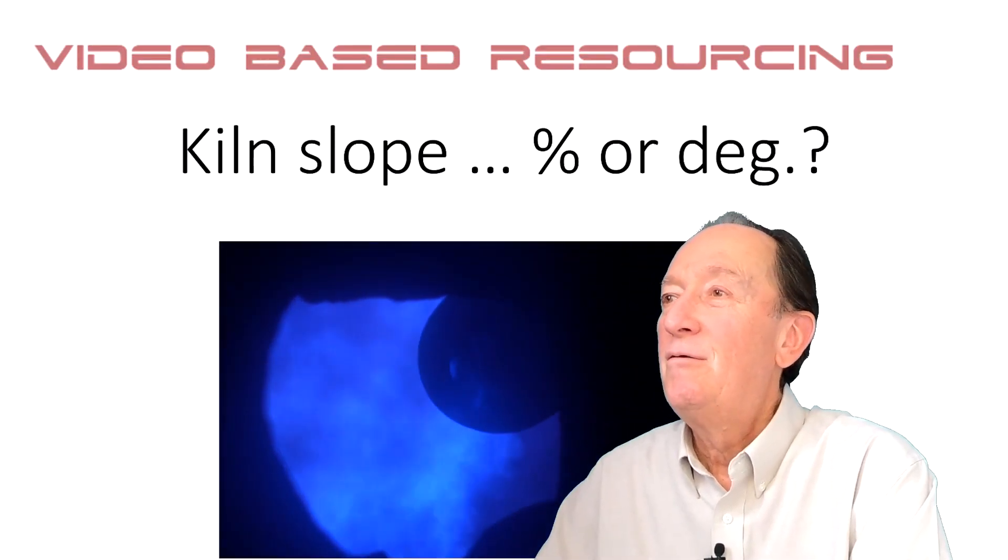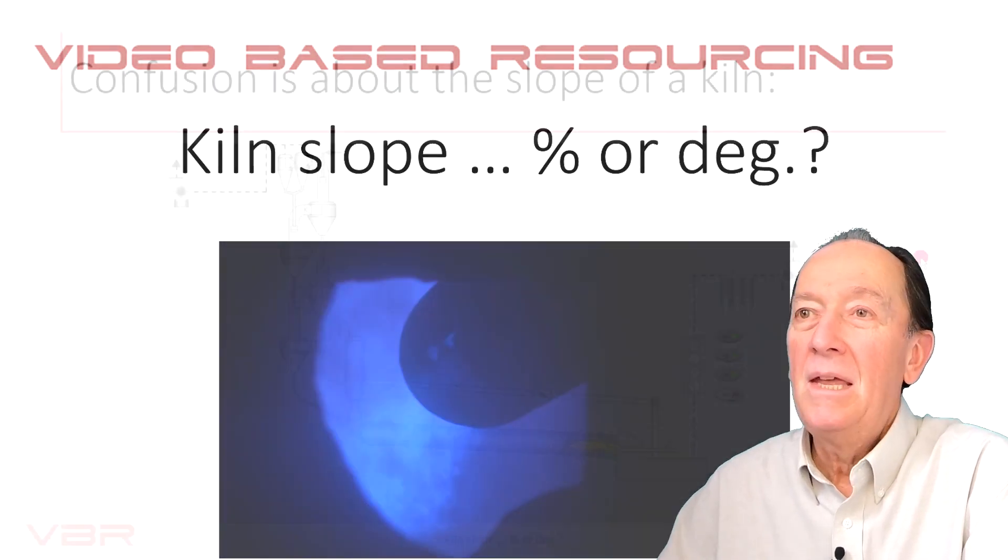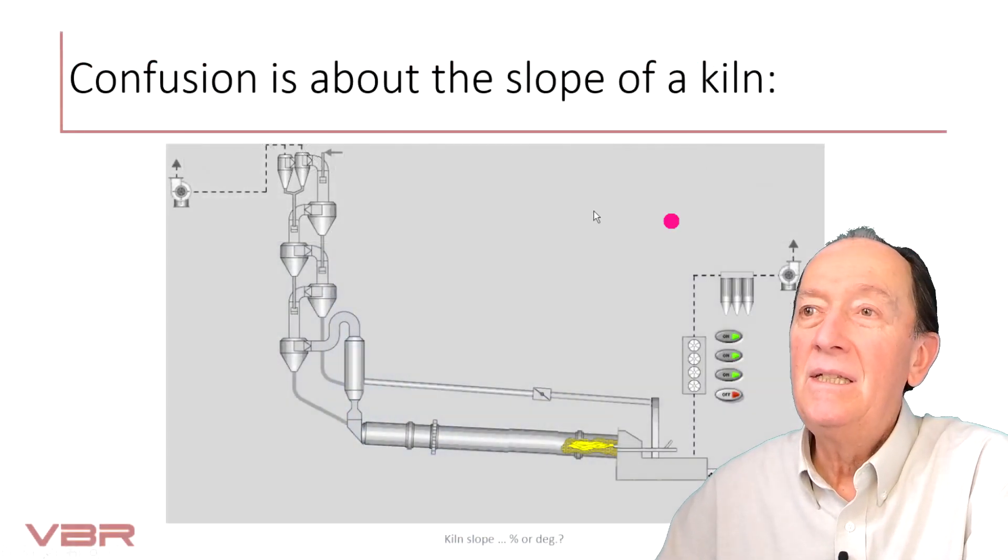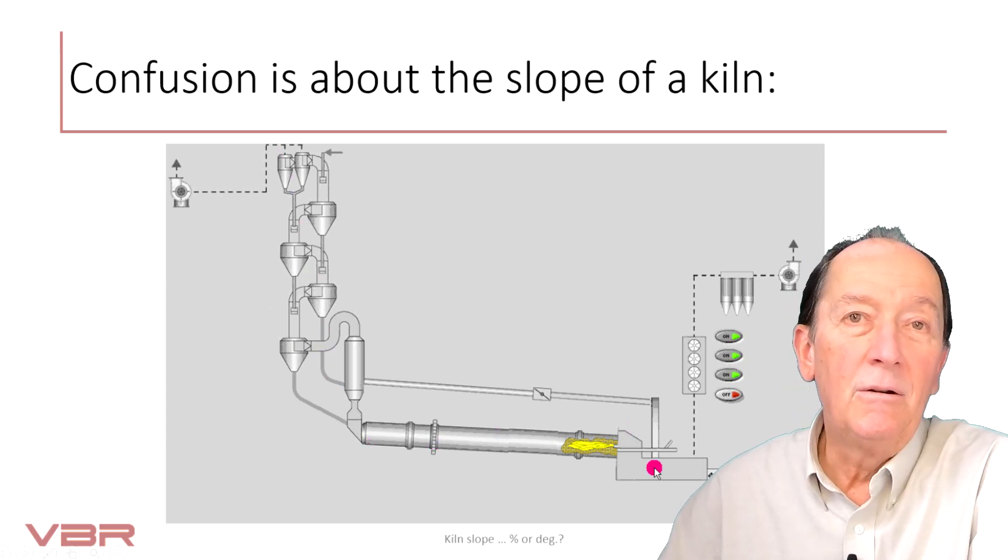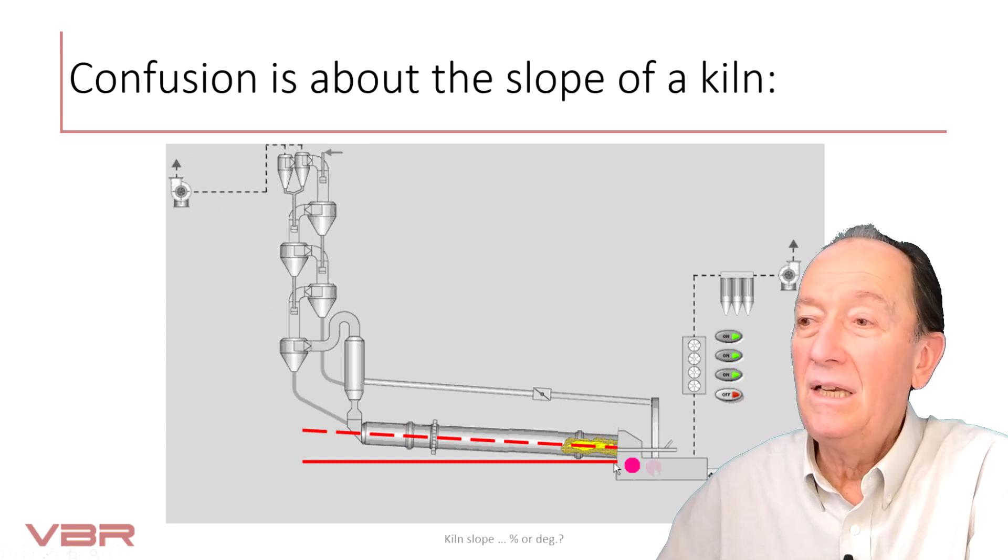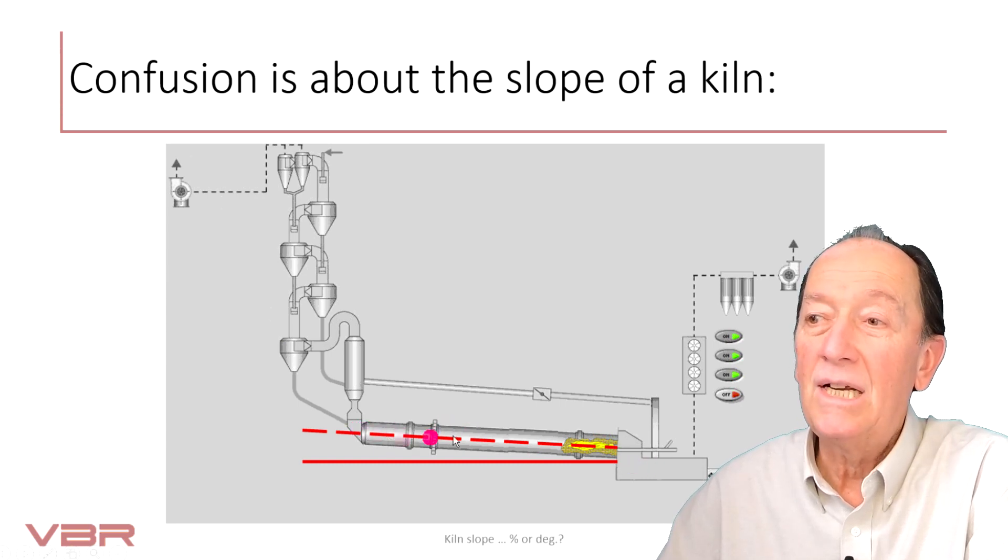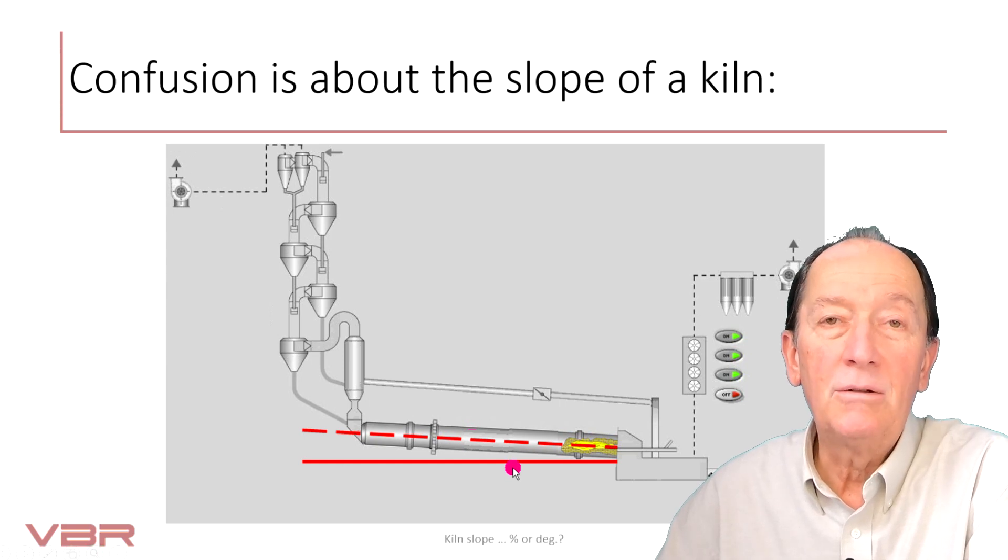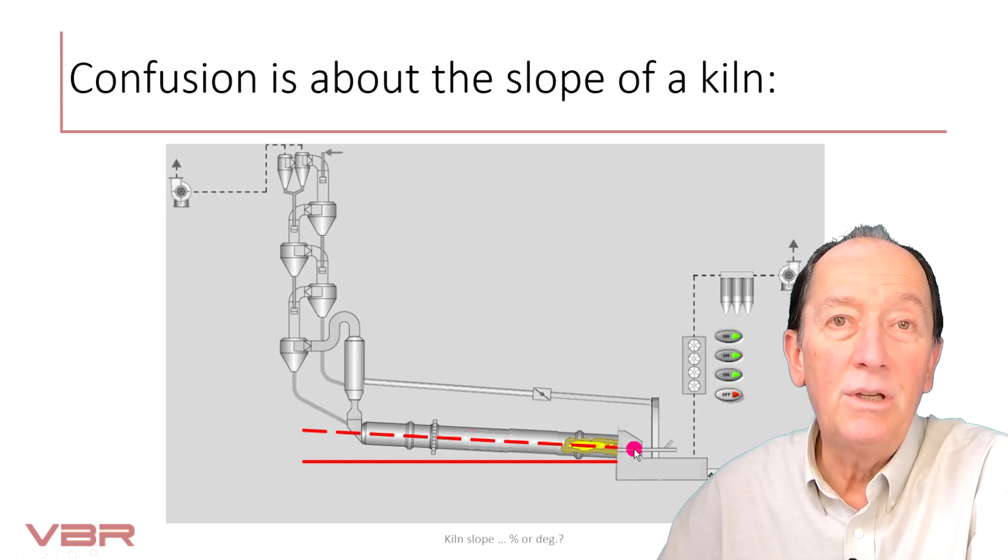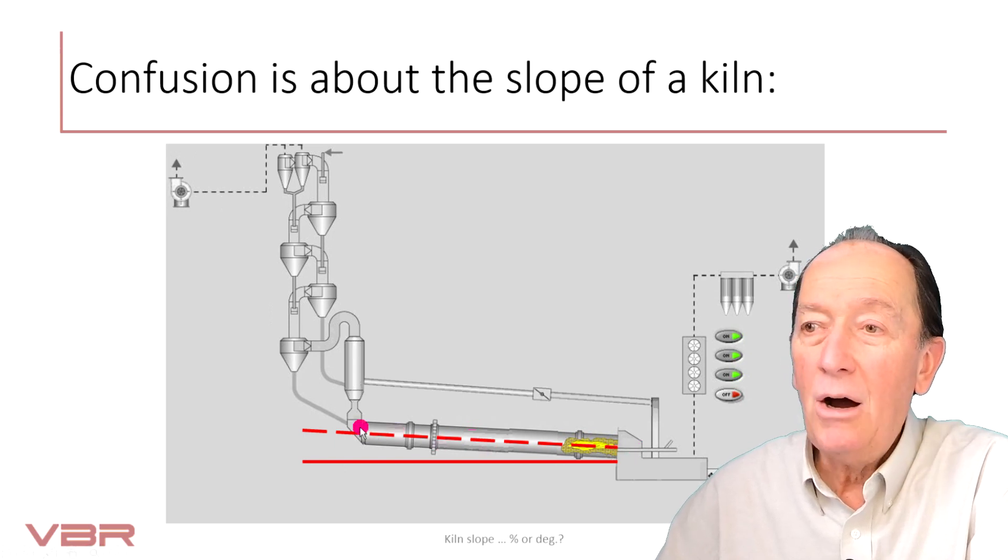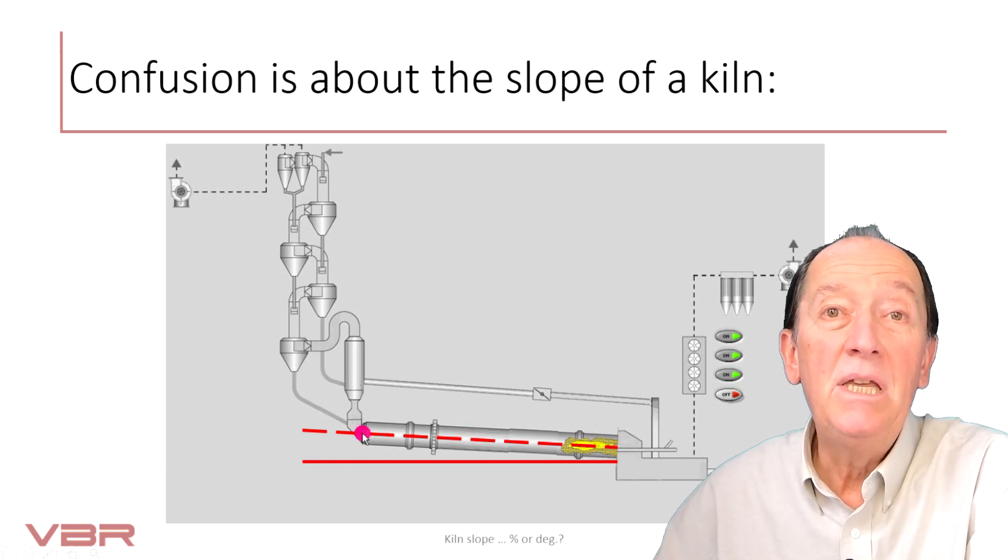To start with, let me move a little bit away from the screen. What we see is a preheater tower, the kiln itself, and the cooler. The slope is basically represented on the dashed line in comparison to horizontal. And the question is, if I were to stand at the discharge end of the kiln, here next to the cooler, how higher up would the preheater or the kiln inlet be in comparison to the horizontal line?